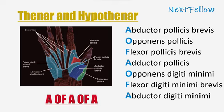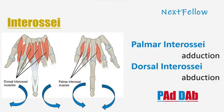Opponens digiti minimi, flexor digiti minimi brevis, and abductor digiti minimi form the hypothenar muscles.